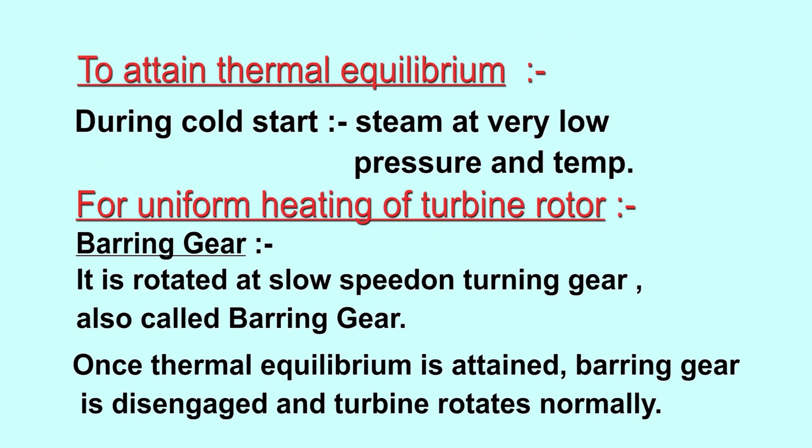First, we will look at the situation of a cold start. In this case, the boiler has started steam generation, but steam is not at full pressure and flow. Instead, steam is sent at a relatively small flow rate to heat up the turbine parts and attain thermal equilibrium. To facilitate uniform heating of the turbine rotor, it is rotated at a slow but constant speed using the turning or barring gear. Once thermal equilibrium is attained, the turning gear is disengaged and the turbine is allowed to reach its working speed with the required steam flow.